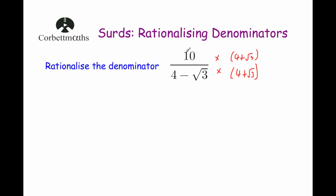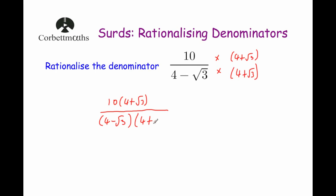So doing that, let's multiply the numerator by 4 plus root 3 — that would be 10 bracket 4 plus root 3, and we'll expand that in a moment. The denominator will be 4 minus root 3 multiplied by 4 plus root 3. Multiplying out the numerator: 10 times 4 would be 40, and 10 times root 3 would be plus 10 root 3.